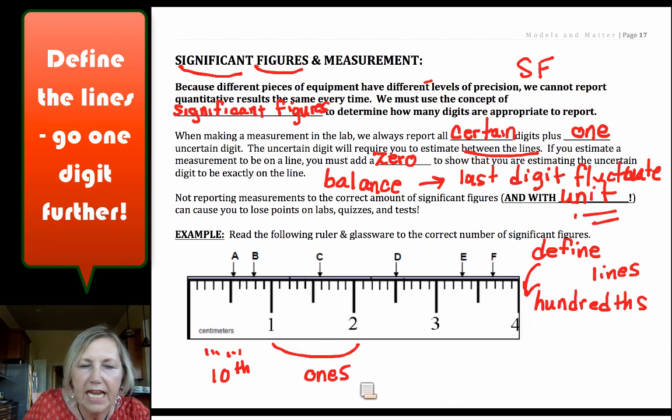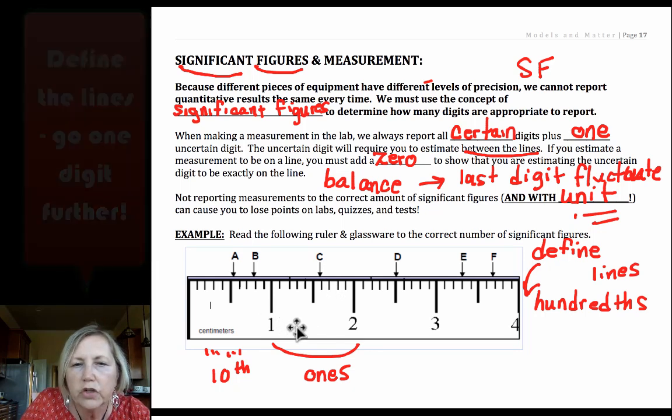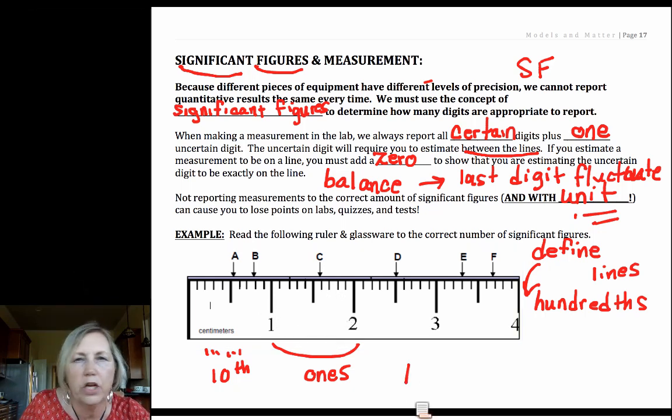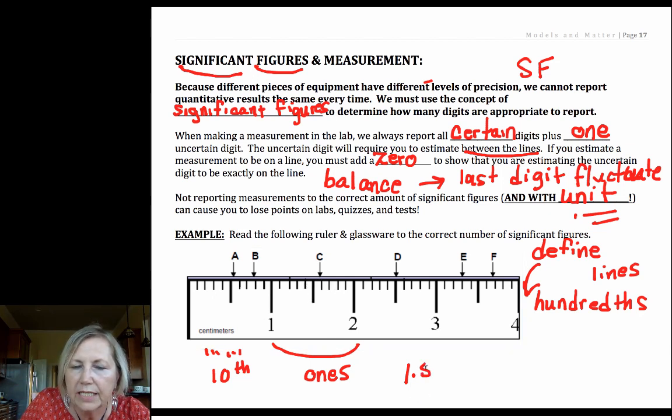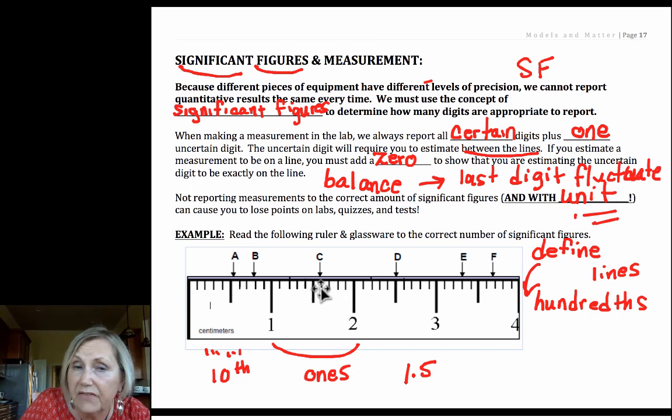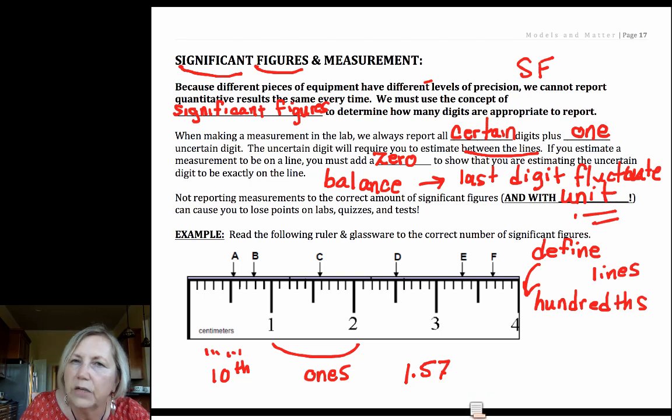Let's look at this letter C here. I know it's greater than 1 but less than 2, so I'm going to put a 1 there and I know that for sure there's a line to tell me that. Then it's 1, 2, 3, 4, 5. Well I know it's greater than the 5 but less than the 6, and I know that because there's a line that tells me that. Well now I have to do some estimating. It's not quite 6. So is it 5.7? Is it 5.8? Is it 5.9? Well different people would estimate that differently and that's understood. So I would write that down as 1.57 centimeters.